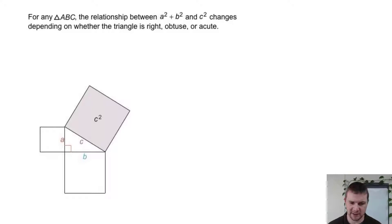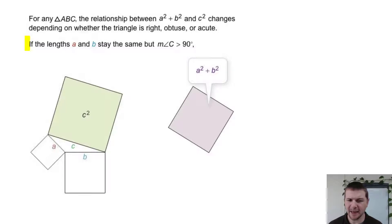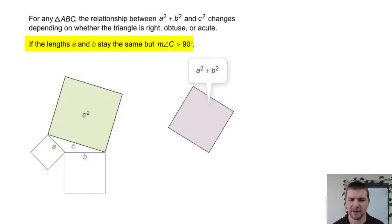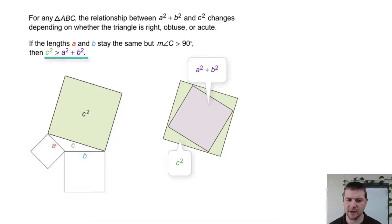Consider the case we've discussed recently: a right triangle, where A squared plus B squared equals C squared. But if lengths A and B stay the same, but the measure of angle C increases and is now greater than 90 degrees, then C squared is greater than the sum of A squared and B squared.